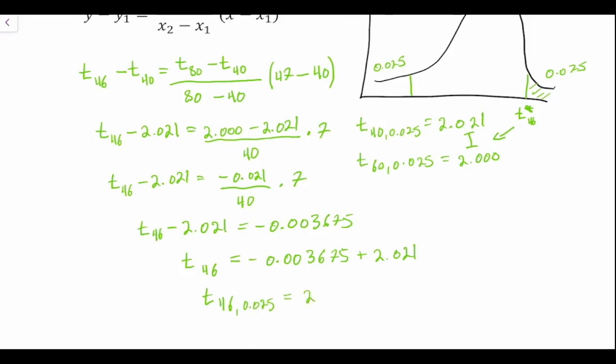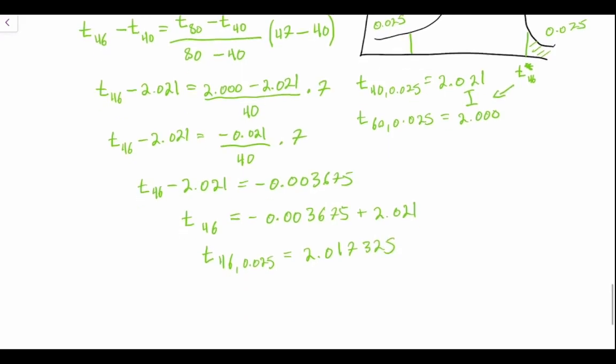T at 46 degrees of freedom with 0.025 in each tail is 2.017325, or if we want to round to three decimal points, we'll just say t at 46 with 0.025 is equal to 2.017. So as we suspected...